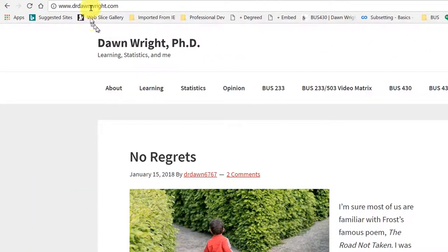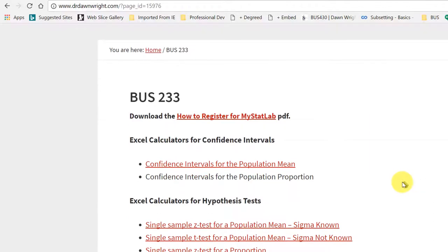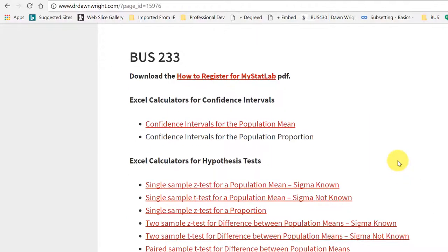If you go to my website, www.drdonright.com, click for business 233 right now, and it will bring up a page that has some links to some calculators. If we look down here, Excel calculators for hypothesis tests, single sample z-test for population mean sigma known. That's what we want.